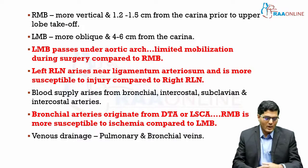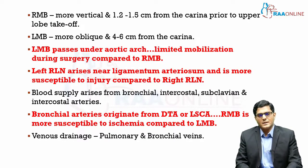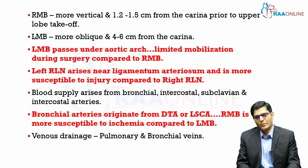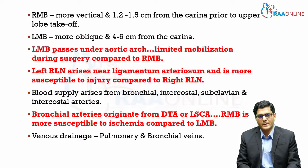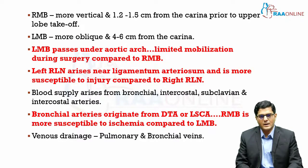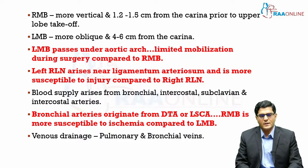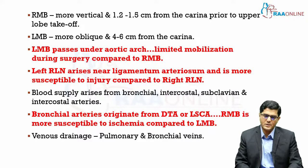The left main bronchus passes under the aortic arch, so during surgical procedures involving mobilization of the trachea the left main bronchus has very limited mobility compared to the right. The left recurrent laryngeal nerve arises near the ligamentum arteriosum and is more susceptible to injury than the right recurrent laryngeal nerve. The blood supply for the trachea arises from the bronchial, intercostal, and subclavian arteries; the bronchial arteries arise from the descending thoracic aorta and the left subclavian artery. Therefore, the right main bronchus is more susceptible to ischemia compared to the left.